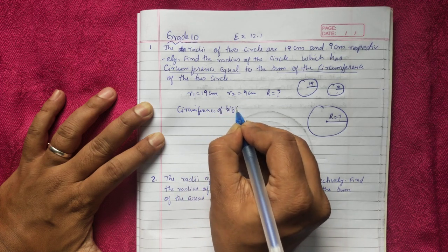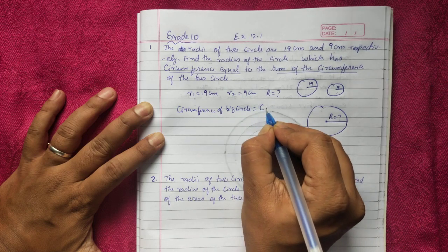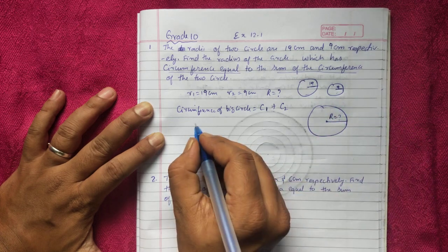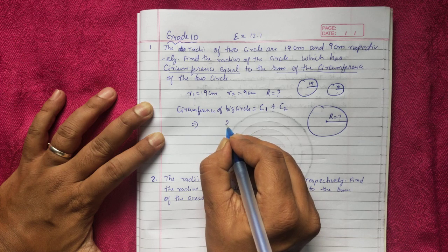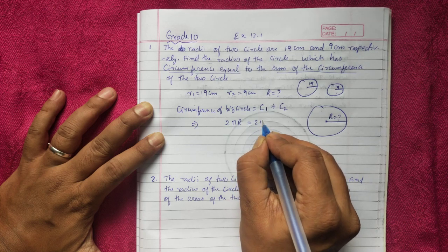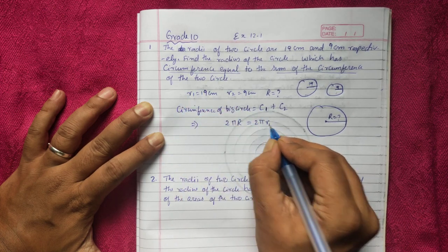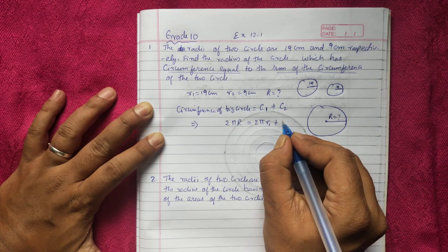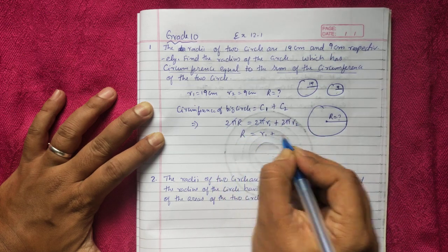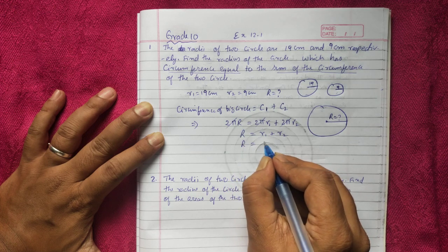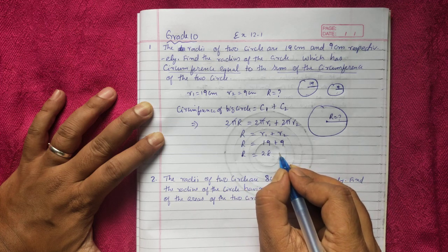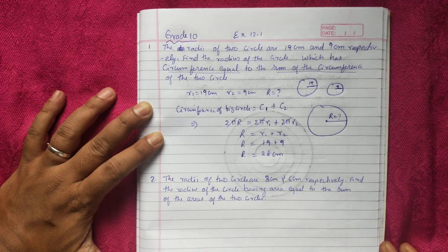The condition given is: circumference of big circle = circumference of first circle + circumference of second circle. The circumference formula is 2πR. So: 2πR = 2πR1 + 2πR2. We can cancel 2π throughout, leaving R = R1 + R2. Putting in the values: R = 19 + 9 = 28 cm. You can pause the video to write the solution.